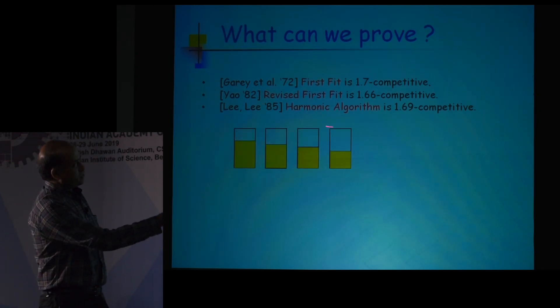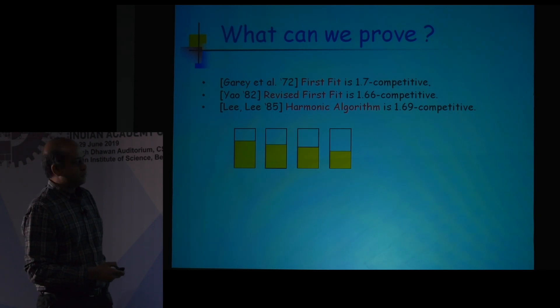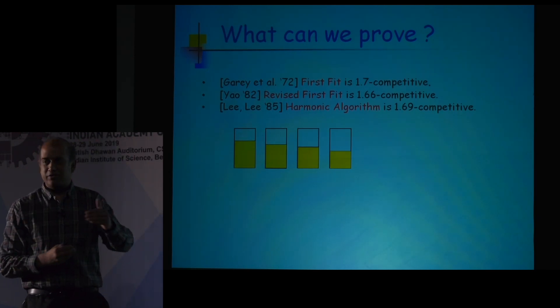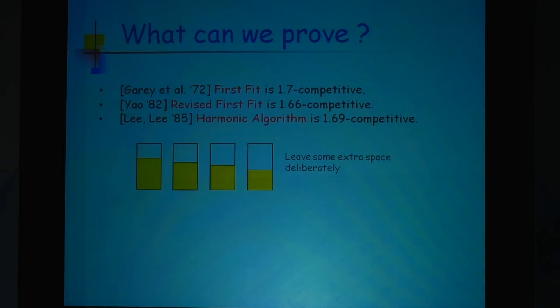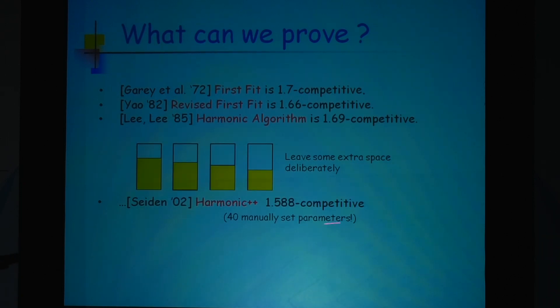The harmonic algorithm said that if you go back to that example, you were very aggressive in packing the first few bins. Instead, it said you should leave out some large space in some of the bins. Some turns out you can do slightly better. Then came more complex algorithms — with about 40 parameters to set — and you could improve the constant from 1.7 down to 1.588, meaning not 70% worse but 58% worse.